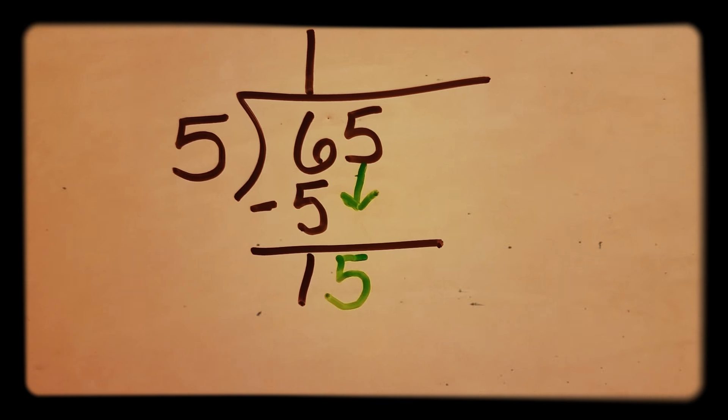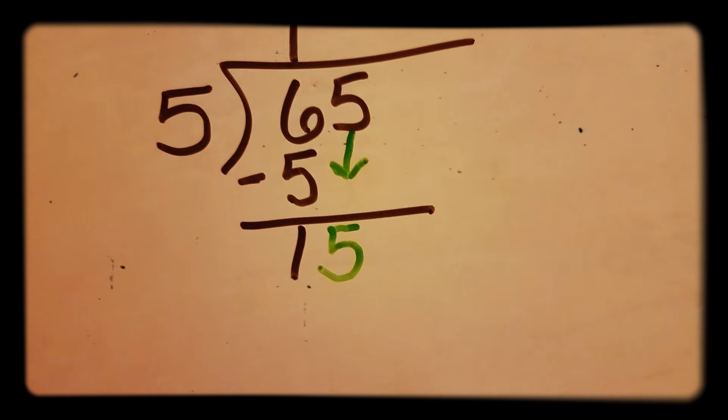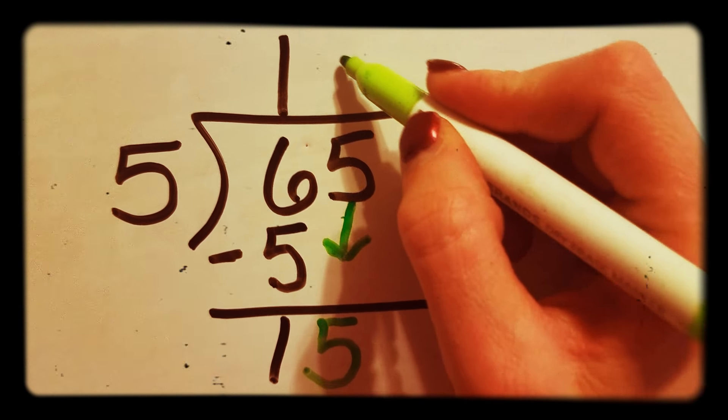So now you have 15. How many times does 5 go into 15? Three times. So you want to write the 3 right above the 5.